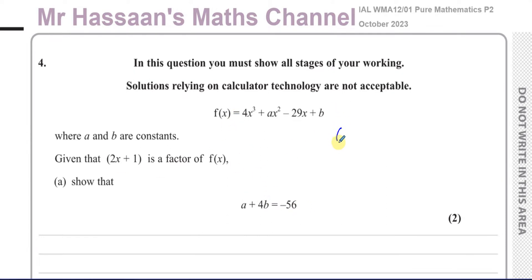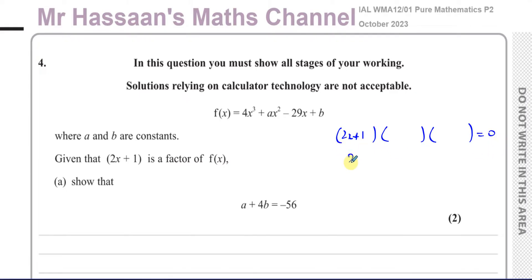If 2x + 1 is a factor of the expression, it means that when you factorize this cubic — which normally has three factors — one of them is going to be 2x + 1. How can we use the fact that this is a factor to help us? Well, if this is a factor, when you equate it to 0, then 2x + 1 = 0, which gives x = -1/2. So if I replace x with -1/2 inside the function, what comes out is 0.